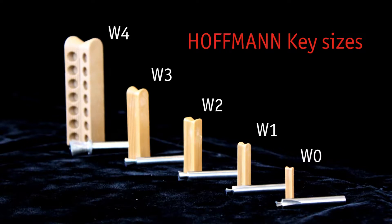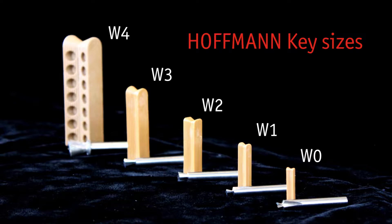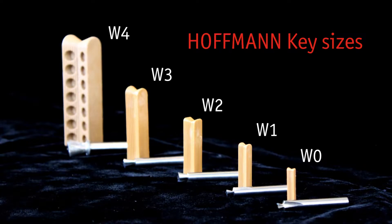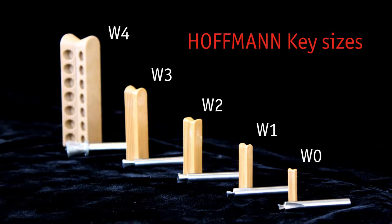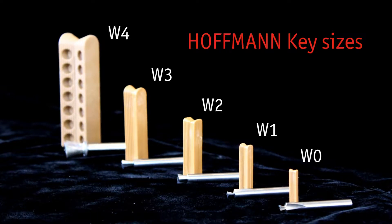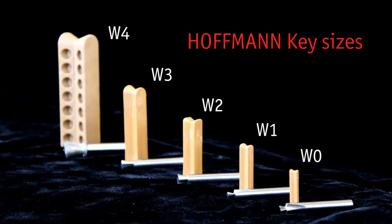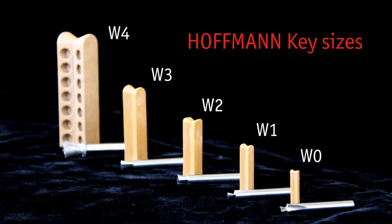W0 for very narrow moldings, W1 for small profiles, W2 as the cabinet maker's key, W3 for higher strength applications, and W4 is used in the post and beam industry. Hoffman offers the right key for any situation.